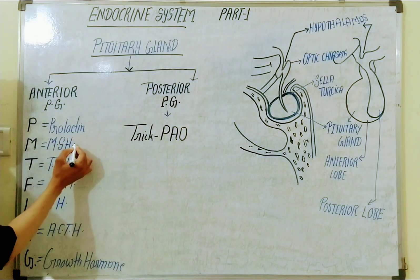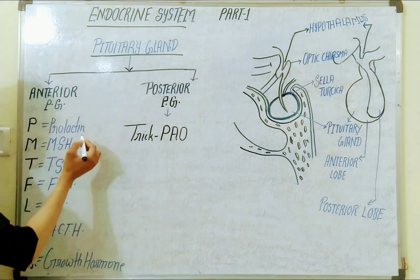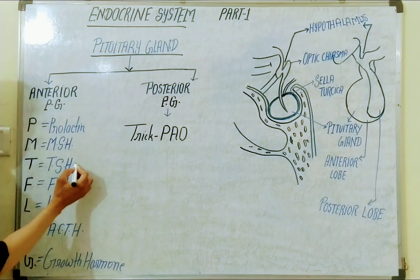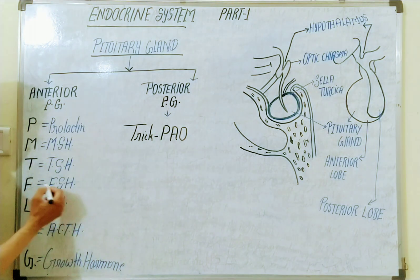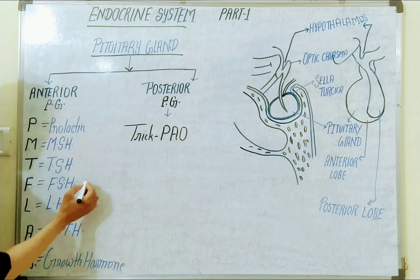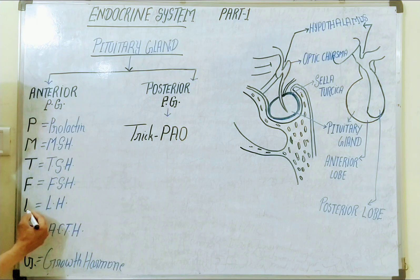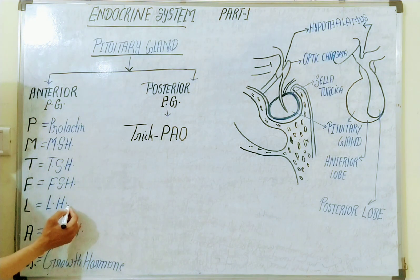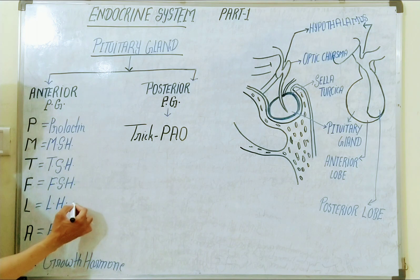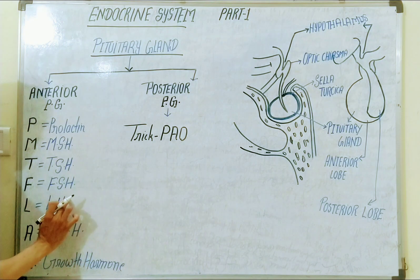The anterior pituitary also secretes MSH (melanocyte-stimulating hormone), TSH (thyroid-stimulating hormone), FSH (follicle-stimulating hormone), and LH (luteinizing hormone), which stimulates hormones in both males and females.